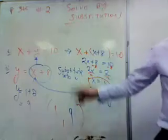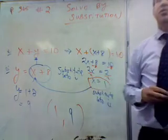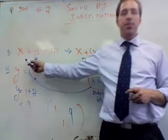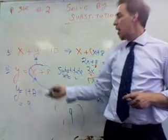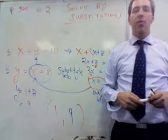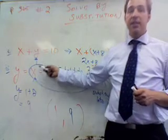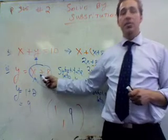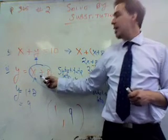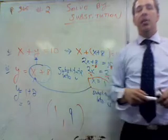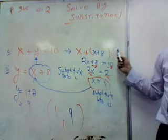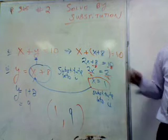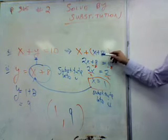So we're on page 365 from tonight's homework, number 2, and we're solving by substitution. Our two equations are x plus y equals 10 and y equals x plus 8. What we do is substitute x plus 8 in for y, and we get x plus x plus 8 equals 10, because that y got replaced by x plus 8. Then we just solve that.